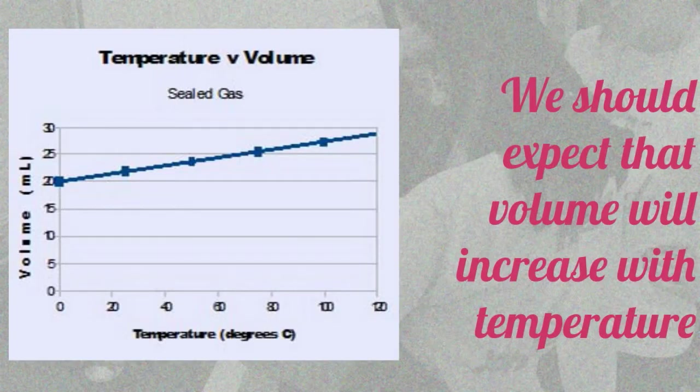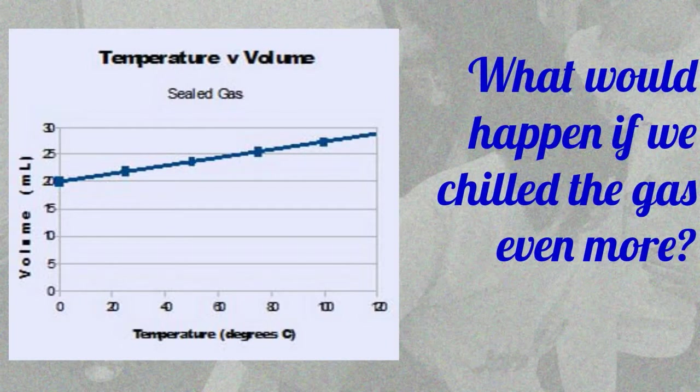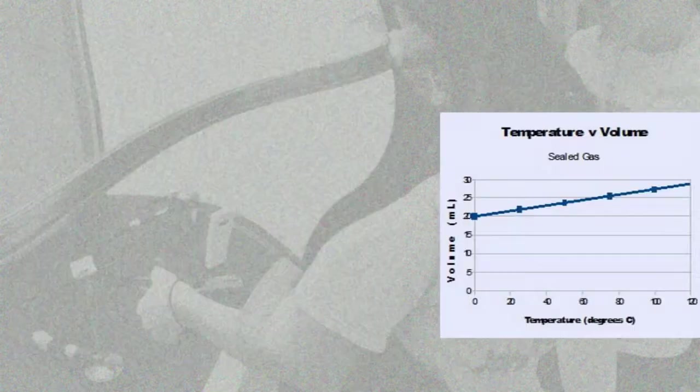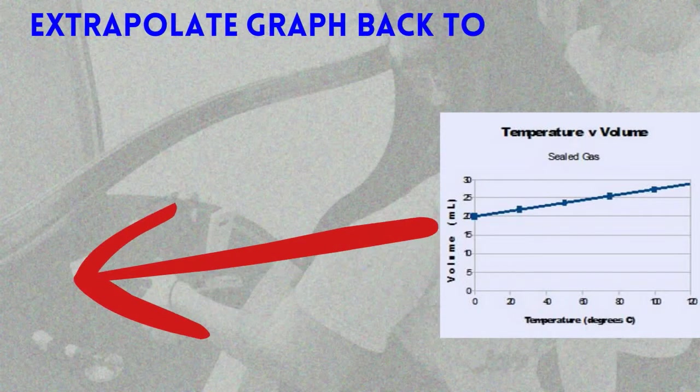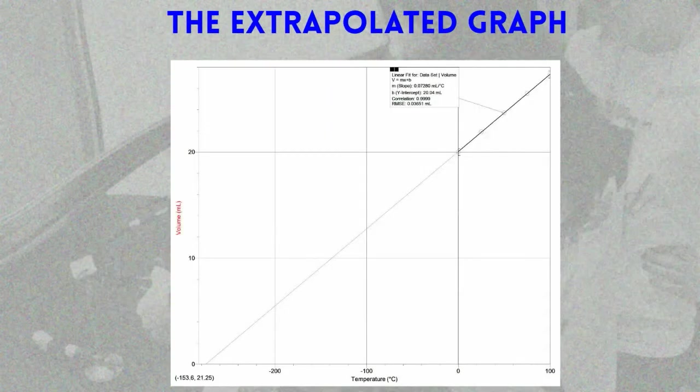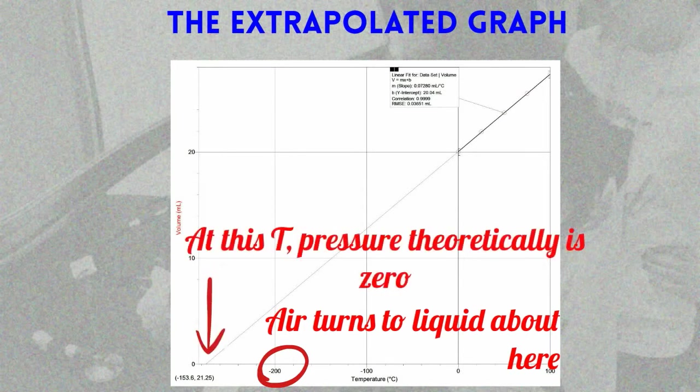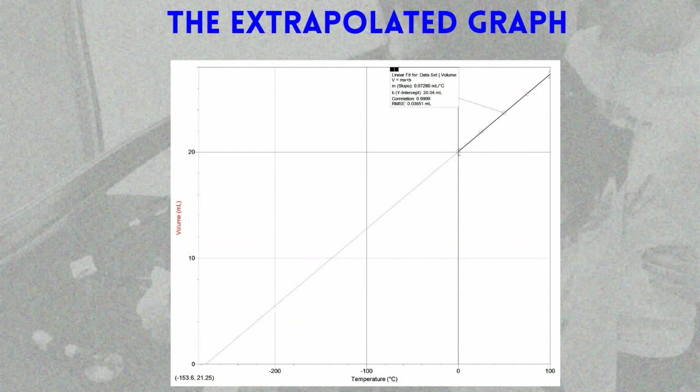Then they asked what would happen if we chilled the gas even more with much lower temperatures. So they extrapolated the graph back all the way to the temperature that would cause the volume to drop to zero. They knew the gas would turn into a liquid long before that zero point, but they looked for the temperature that theoretically would cause a zero volume.